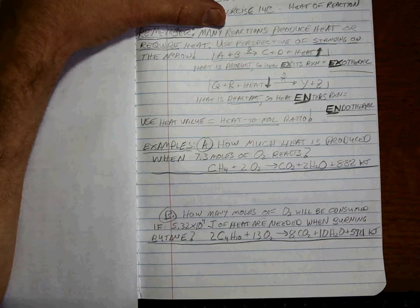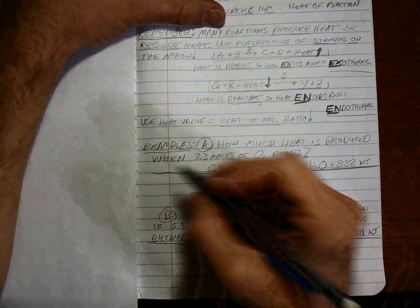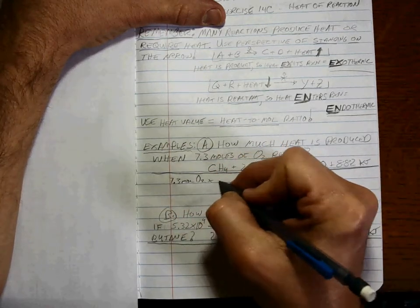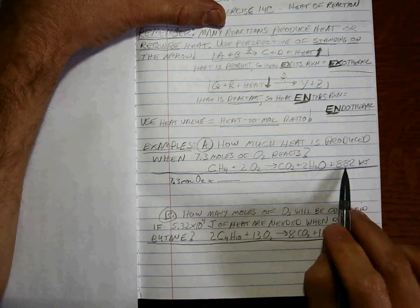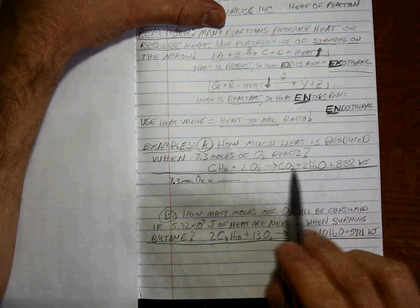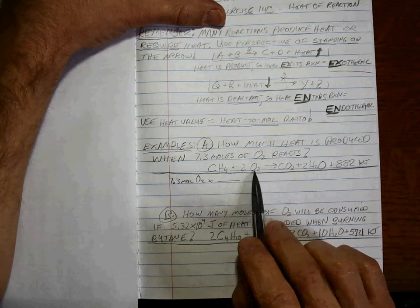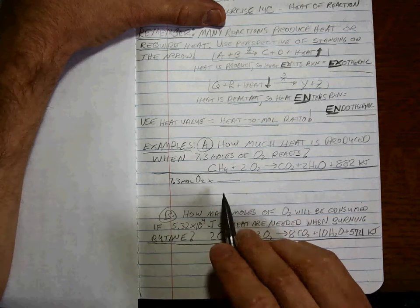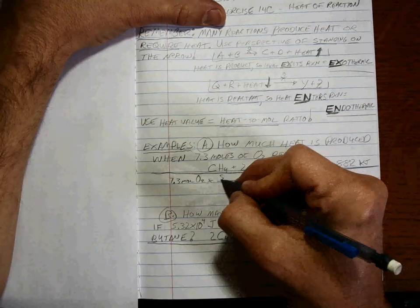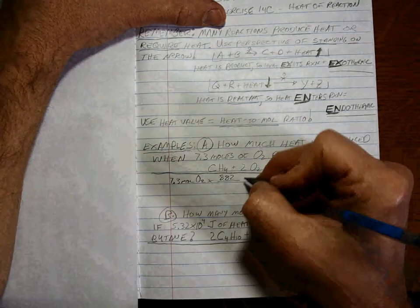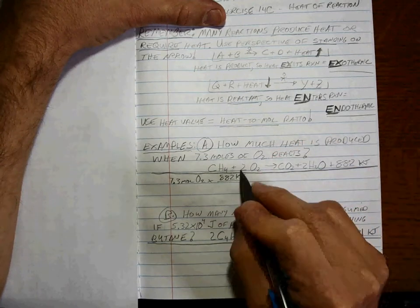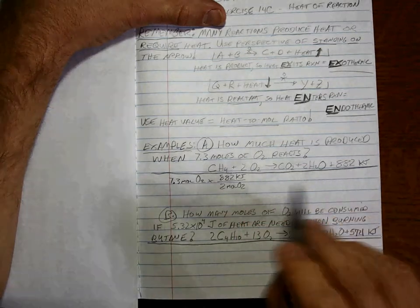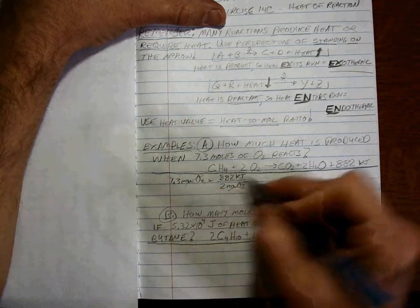Okay, you're back. We've got one number in the problem: 7.3 moles of O2. If 2 moles reacts, this much heat is produced. That's the ratio. It's the same as saying if 2 moles of this reacts, then 1 mole of that is produced. Heat is where we need to end up, so 2 moles of O2 reacts to make this much heat. That's it.